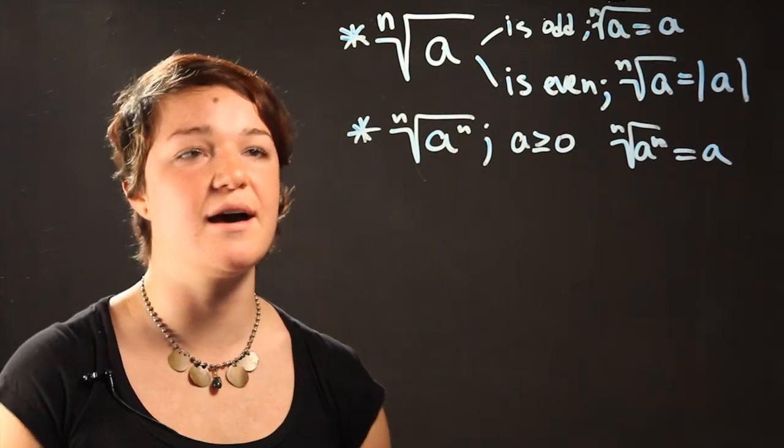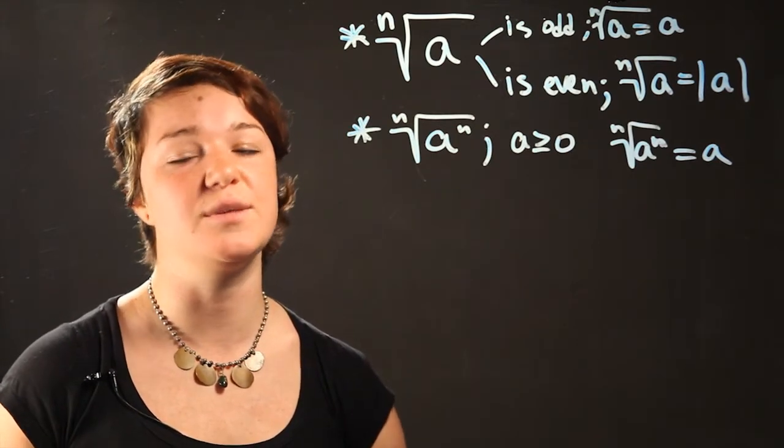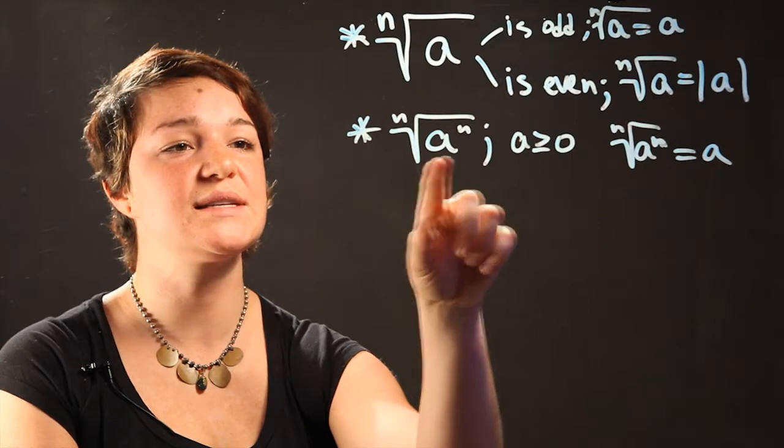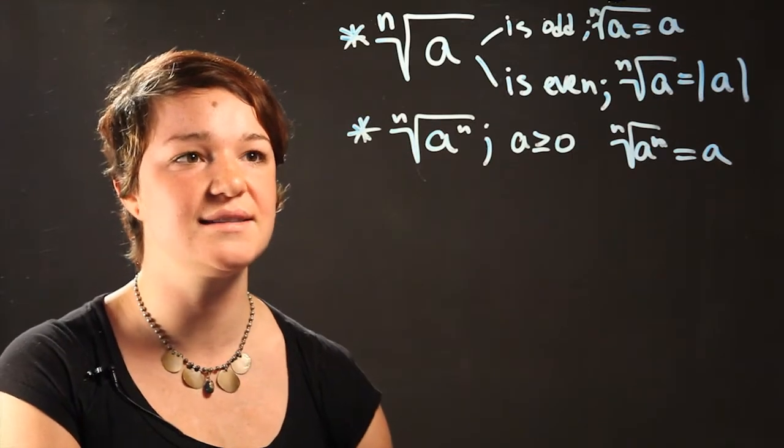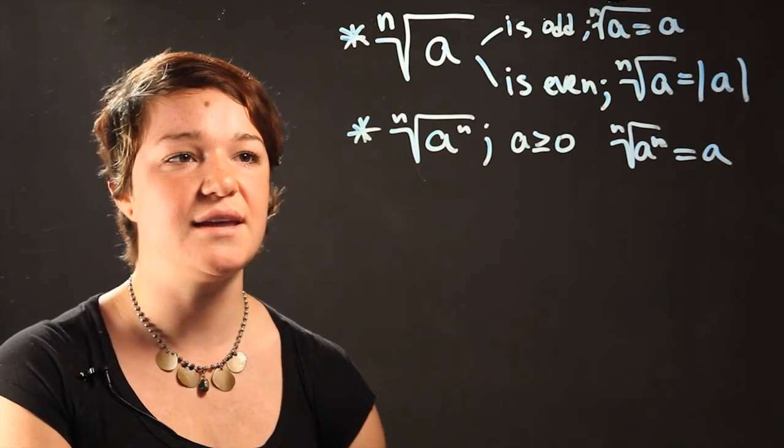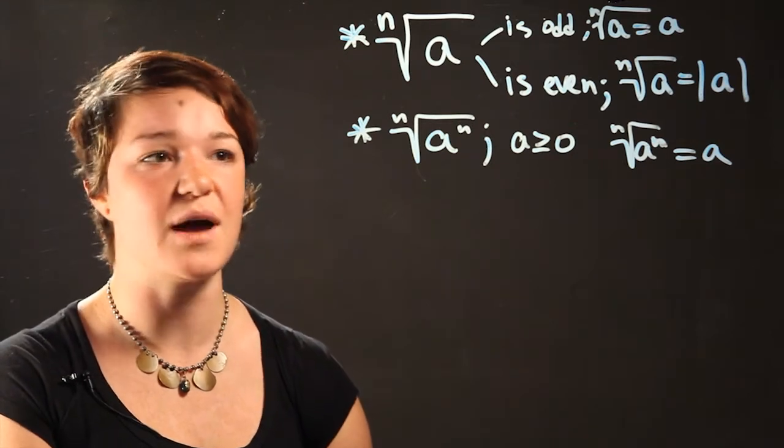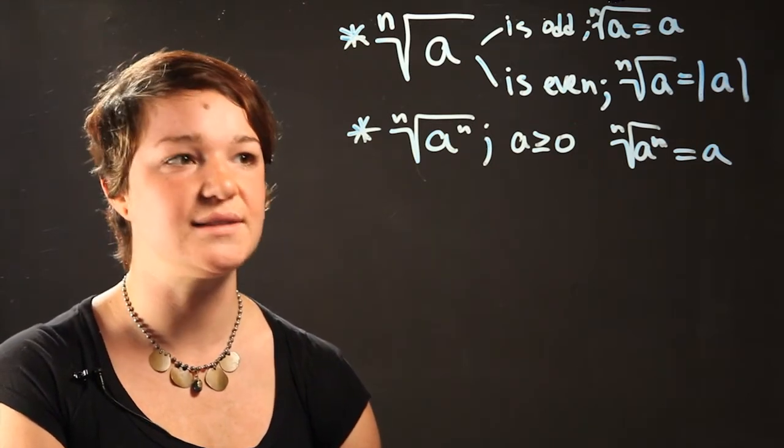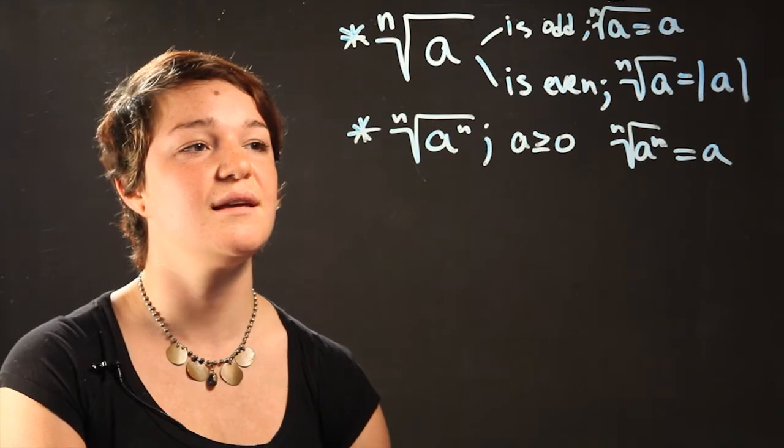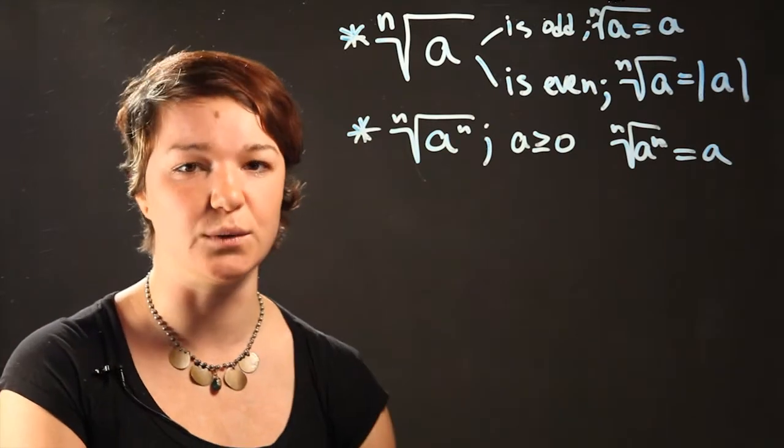This is a simple way of looking at radicals and what it's going to be equal to. Basically what this expression is saying is that if a is to the n power and you're taking the radical with the index of n power and a is greater than zero, then this expression is basically equal to a.